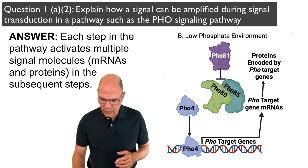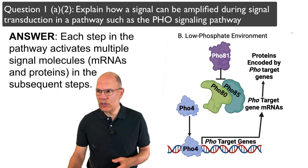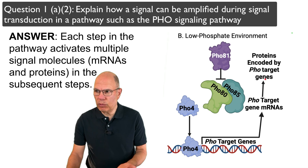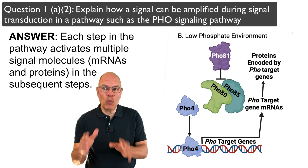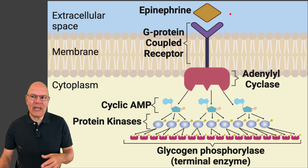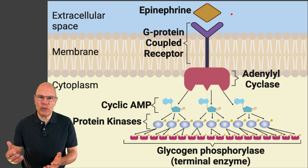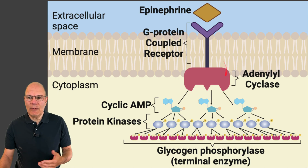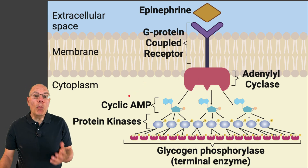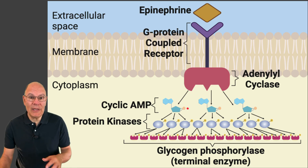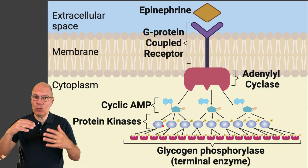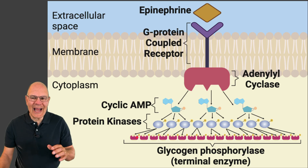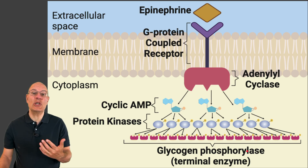FOX4 is transcribing the target genes, making multiple mRNAs, and those mRNAs can each create multiple proteins. A more dramatic example involves amplification of an epinephrine signal in a G-protein coupled receptor: epinephrine stimulates adenylyl cyclase to create multiple cyclic AMPs. Each cyclic AMP — the second messenger — activates multiple protein kinases, which are part of a phosphorylation cascade that activates many glycogen phosphorylases.